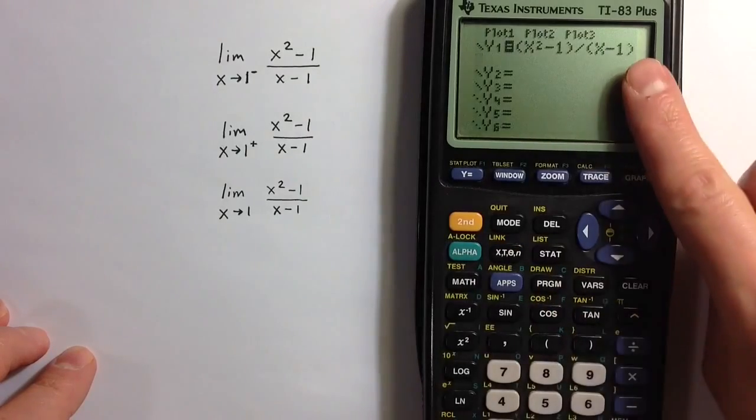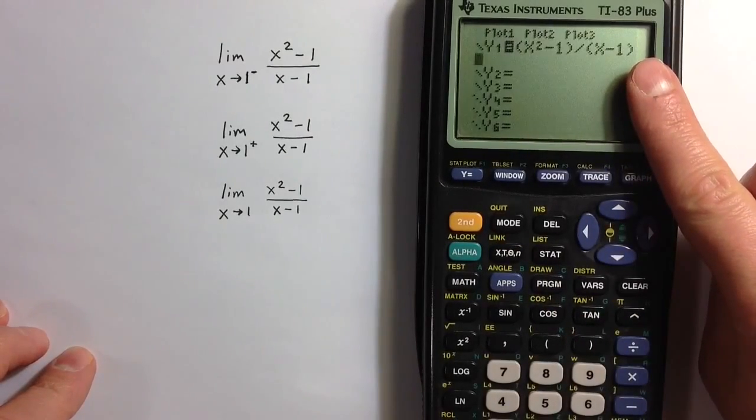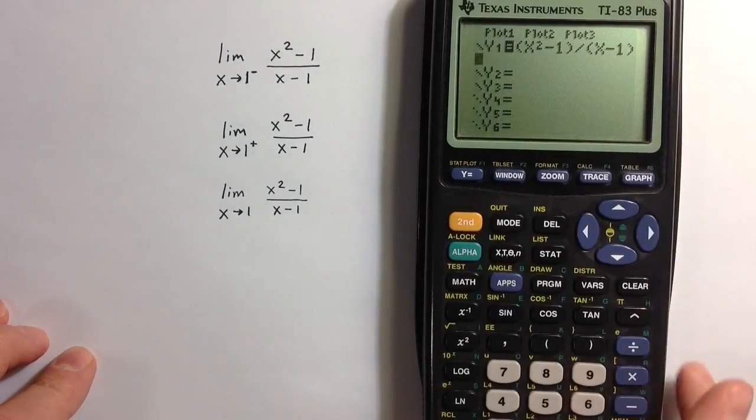Notice that I'm putting the numerator and denominator in parentheses. And we need to do that because we have more than one term in both the numerator and the denominator.